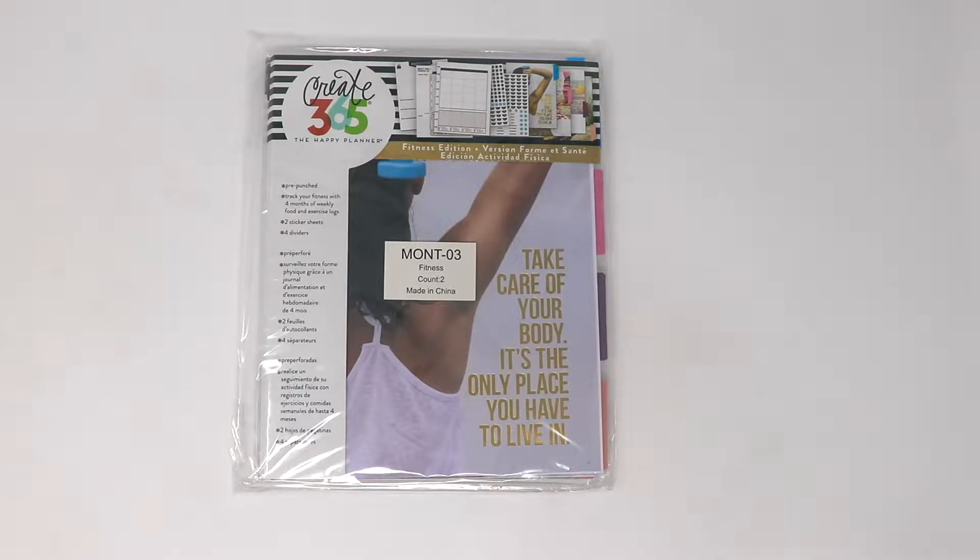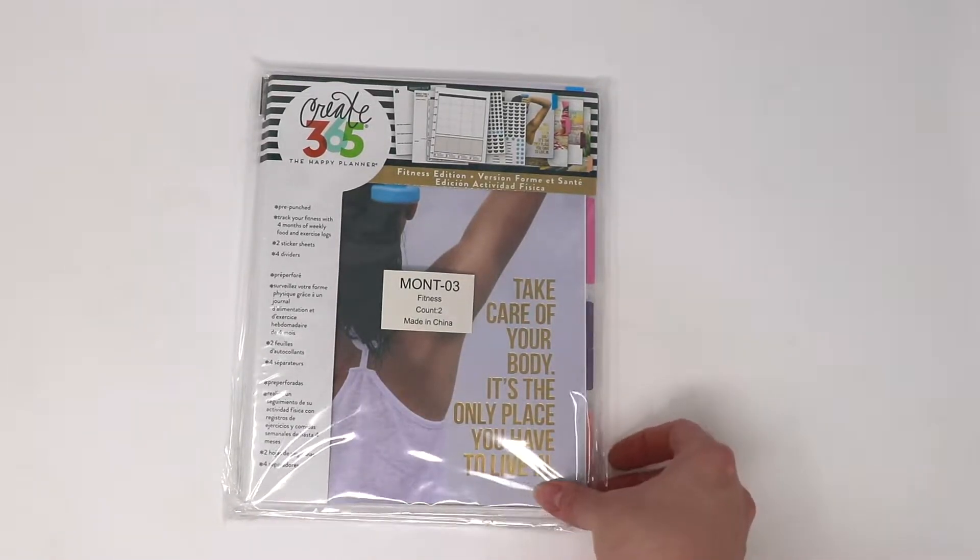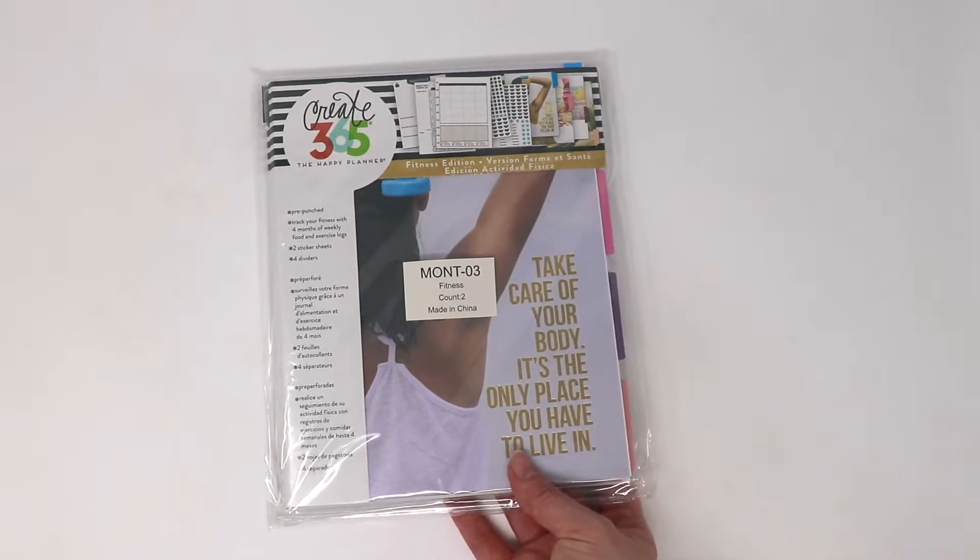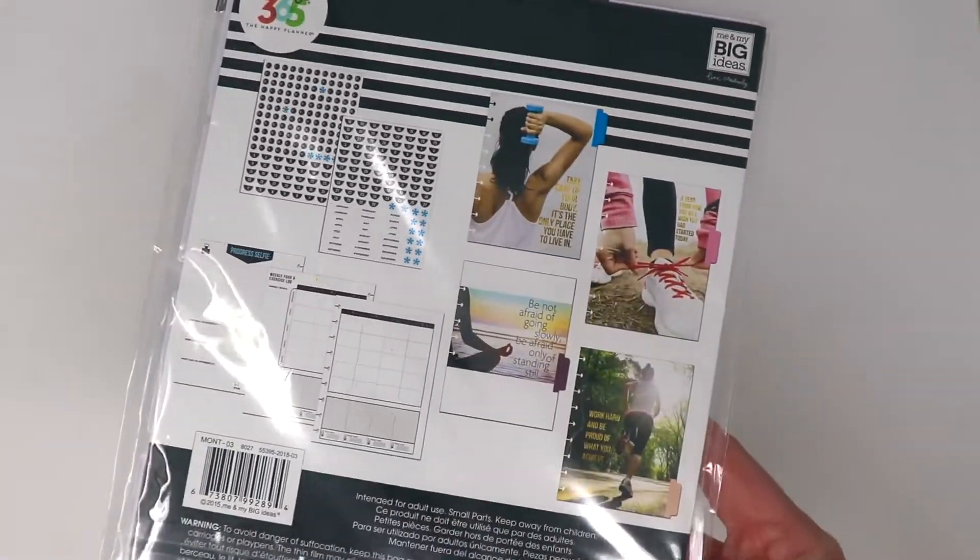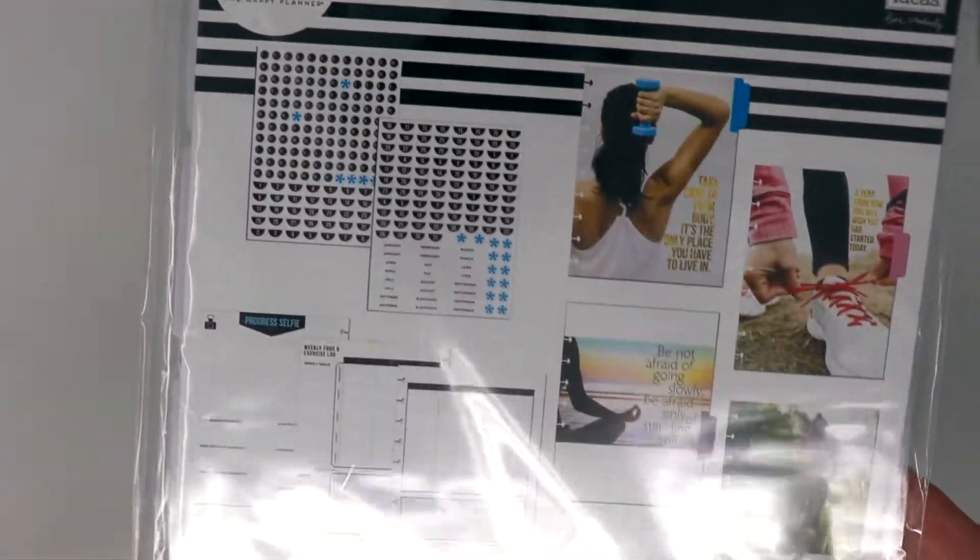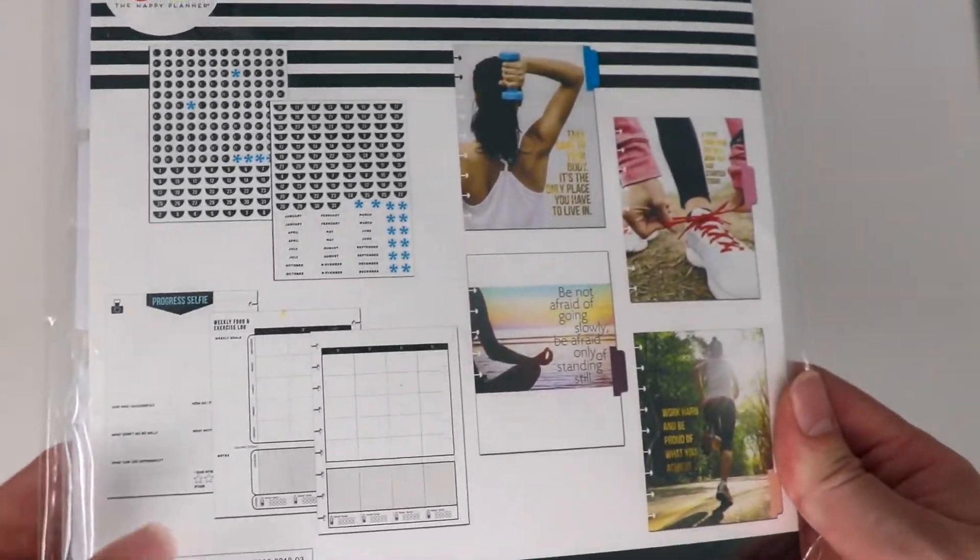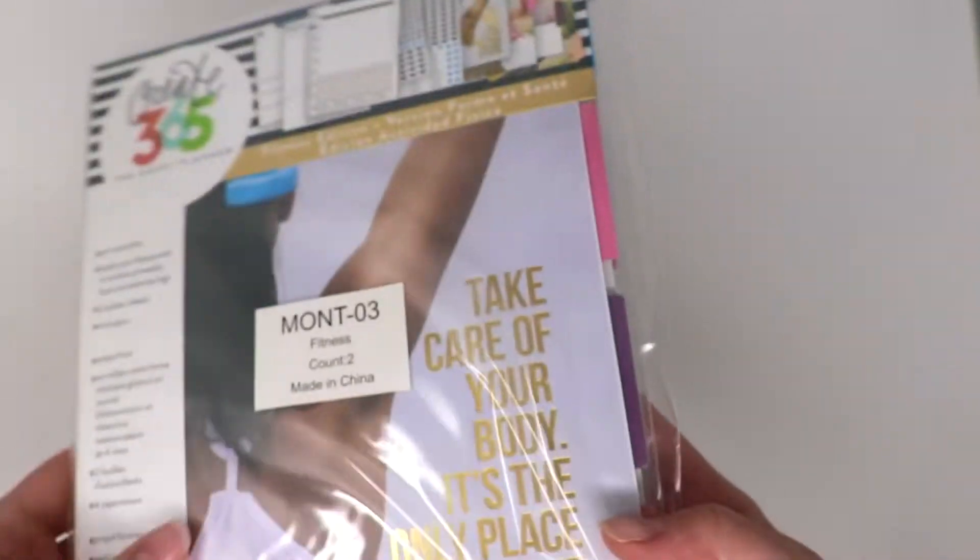It's going to be really helpful just tracking my progress during this time as I try to get healthy and strong again. So on the back it shows you what it comes with - there's some stickers, sorry about the glare, there's some filler pages here and then a few of these dividers. So let's open it up and get a better look at it.